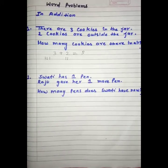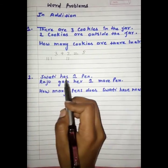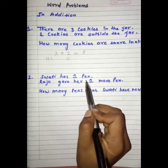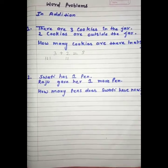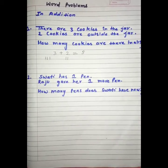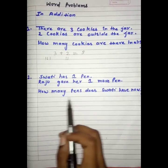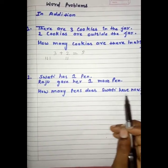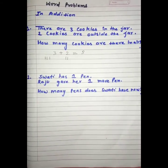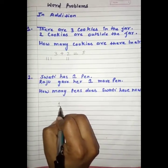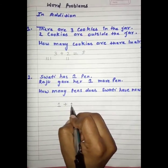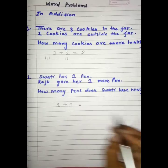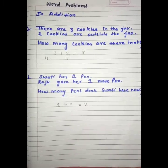Similarly, see the next question. Swati has 1 pen. Swati ke paas 1 pen hai. Raju gave her 1 more pen. Raju ne usse 1 pen aur diya. How many pens does Swati have now? Swati ke paas pehle 1 pen thi, and Raju ne 1 aur diya. Ab Swati ke paas 2 pens ho jayengi.